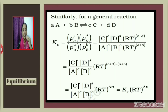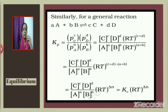For the general reaction a·A + b·B ⇌ c·C + d·D: Kp = P(C)^c·P(D)^d / P(A)^a·P(B)^b. Substituting P = C·RT gives Kp = [C]^c·[D]^d·(RT)^(c+d) / [A]^a·[B]^b·(RT)^(a+b) = Kc·(RT)^((c+d)−(a+b)) = Kc·(RT)^Δn. Therefore, the general relationship is Kp = Kc·(RT)^Δn.